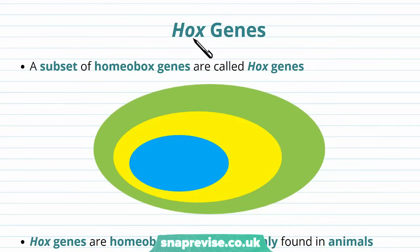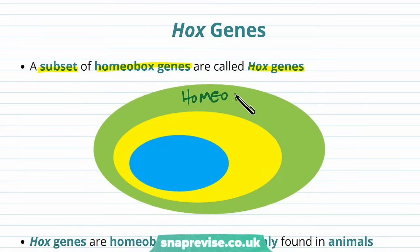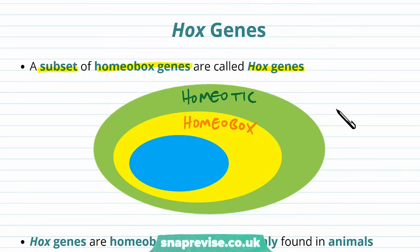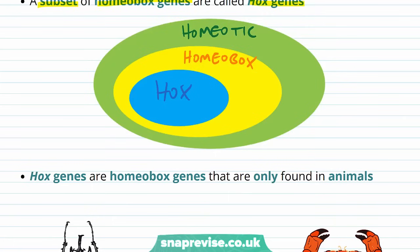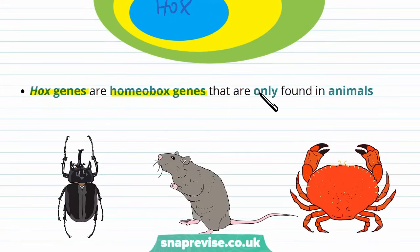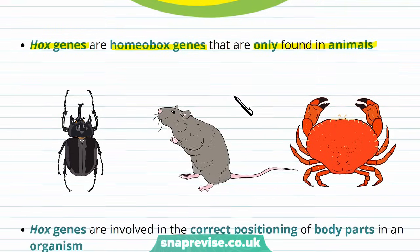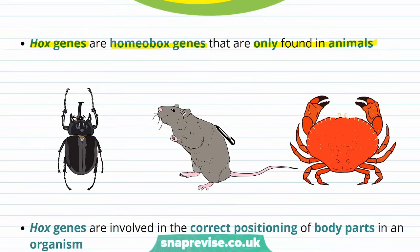Homeobox genes code for those homeodomain proteins, but there's a subset of homeobox genes called Hox genes. To go through the hierarchy again: homeotic genes are all the genes that help organize an organism's shape; within these, homeobox genes code for proteins with a homeodomain transcription factor; and one type of homeobox gene is the Hox gene. Hox genes are a type of homeobox gene found only in animals — insects, mammals, crustaceans — all animals have Hox genes.